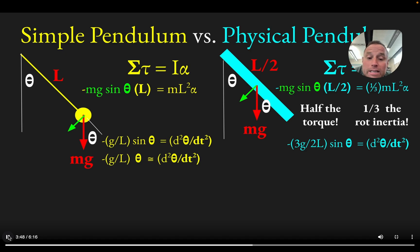And making the small angle approximation, letting sine theta be about equal to theta, we would get these two relationships.